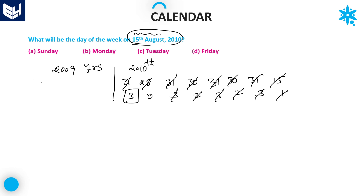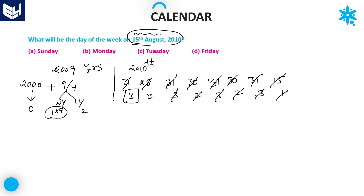For the left-hand side, 2009 completed years: maximum 400 multiple is 2000, with 9 years additionally. For 2000 years, odd days are 0. In 9 years, dividing by 4 gives a quotient of 2, so there are 2 leap years and 7 normal years. Normal years: 7 × 1 = 7 odd days; leap years: 2 × 2 = 4 odd days. Since 7 is exactly 1 week, cancel it — left-hand side value is 4 odd days.